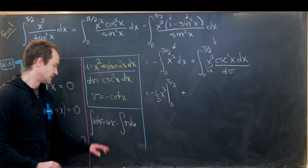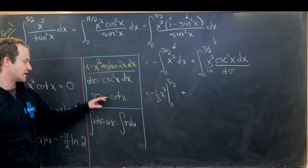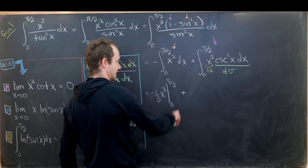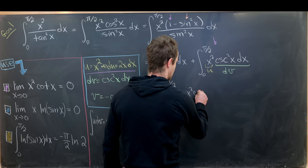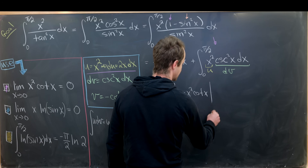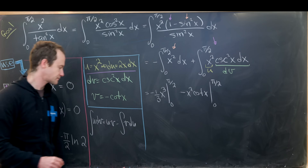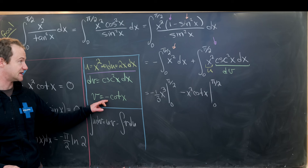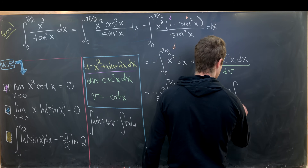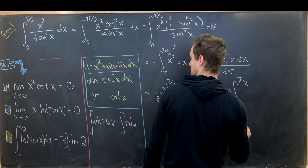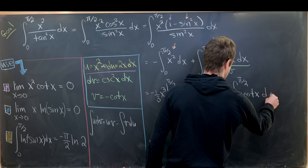So we have x²·cot(x) evaluated from 0 to π/2 — the minus signs cancel — and then plus 2·∫₀^{π/2} x·cot(x) dx.